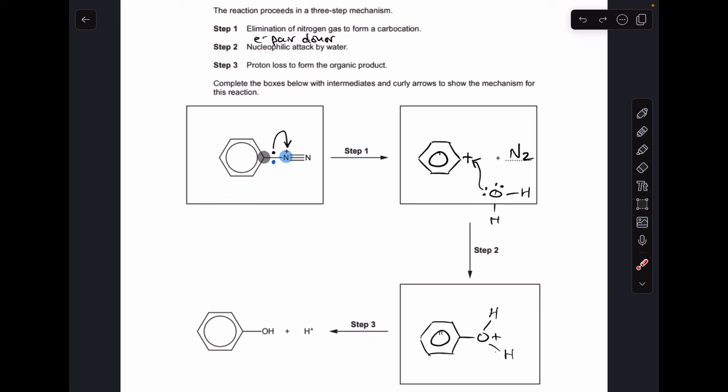And then in step 3, we need proton loss to form the organic product. So the way that's going to work is we need to take a pair of electrons from one of the OH bonds. I'll go for the bottom one. They're going to move onto that oxygen. And that hydrogen will break off as an H+ ion, and it's going to leave phenol as the product.